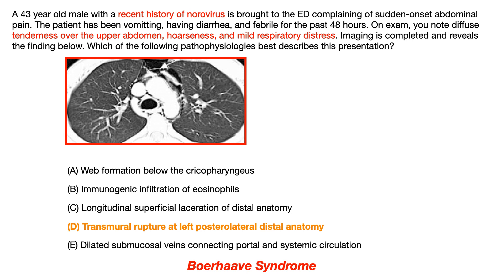Looking at the question stem, the clues pointing to Boerhaave syndrome include a history of norovirus — meaning the patient has been retching and vomiting — tenderness over the upper abdomen, hoarseness, and mild respiratory distress. What seals the diagnosis is the image depicting pneumomediastinum, that is, air in the mediastinum.